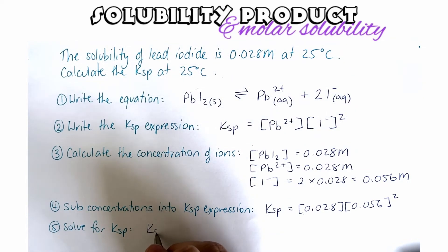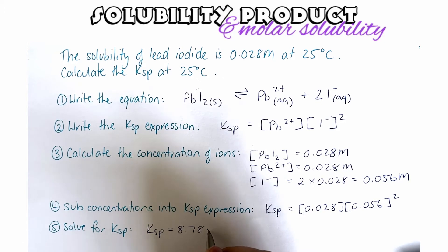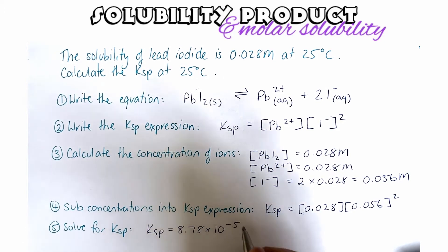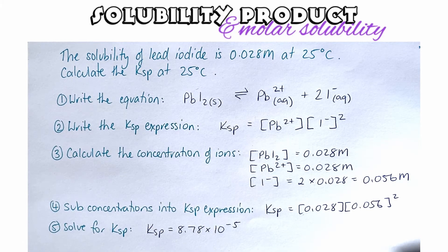And what we end up with is that Ksp equals 8.78 times 10 to the minus 5. And that's it. So we have calculated the Ksp from the solubility of our ionic substance.